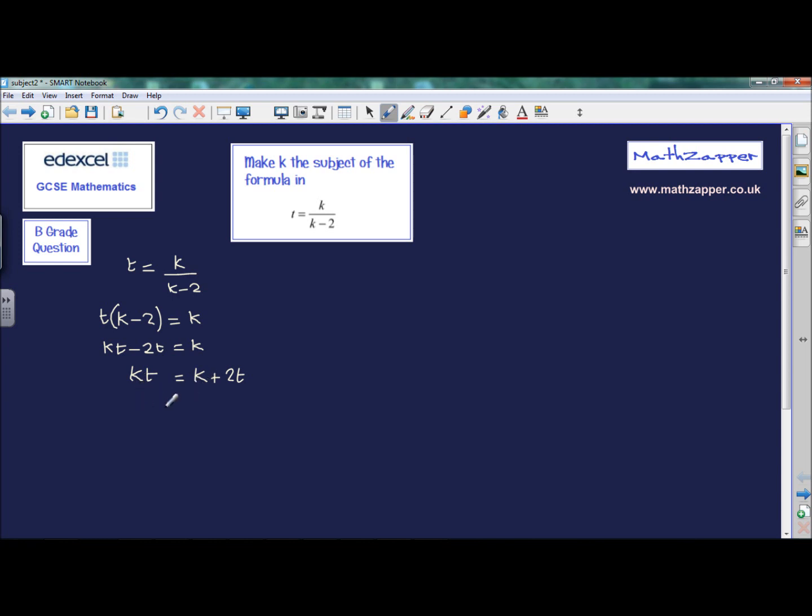And this is what we get, kt minus k on the left. And by subtracting k from the right-hand side, we're simply left with 2t.